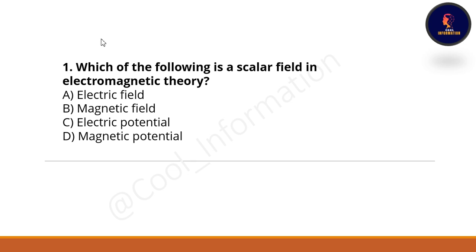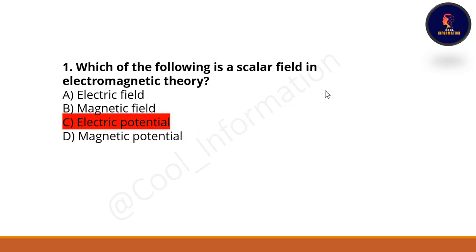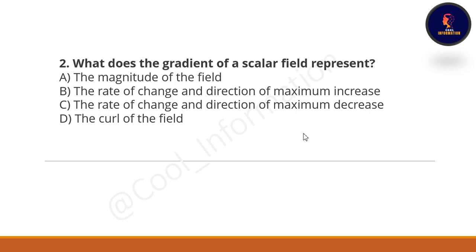The first question is: which of the following is a scalar field in electromagnetic theory? Option A: electric field. Option B: magnetic field. Option C: electric potential. Option D: magnetic potential. The correct option is C, which is electric potential.